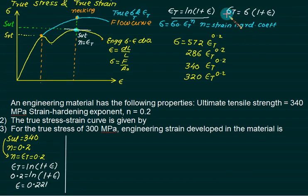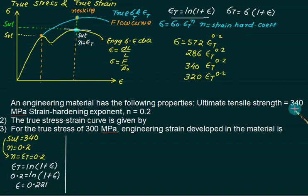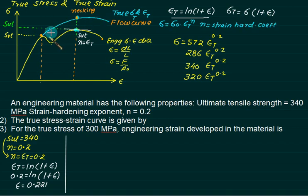The true stress equation says sigma-t equals the engineering stress multiplied by (1 + epsilon). Right now we are at SUT. The engineering stress value given is 340 MPa. We can transfer this to the true stress curve using the conversion equation. To find sigma-0, we first need to know the value of true stress at this point.